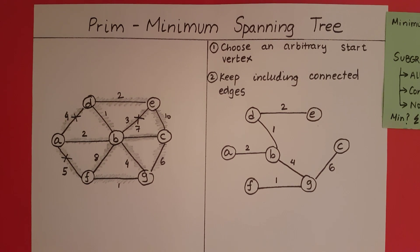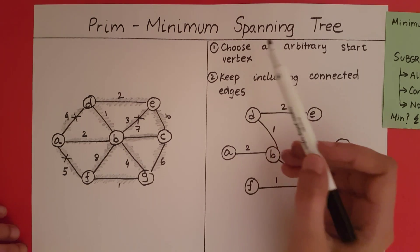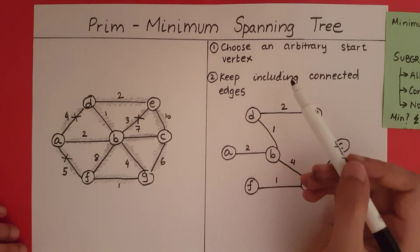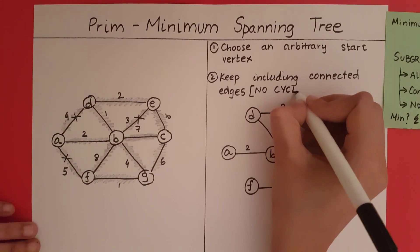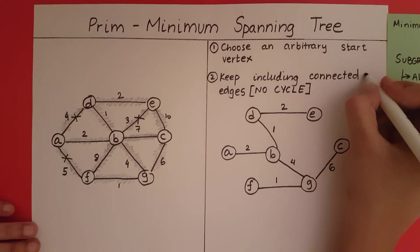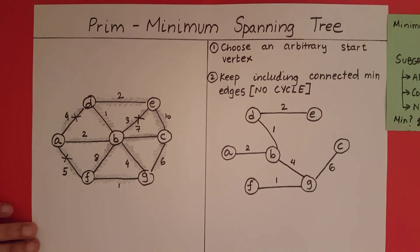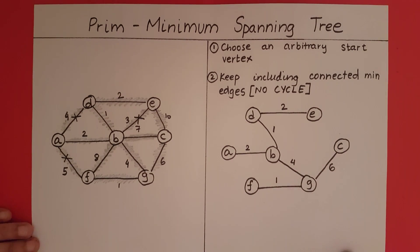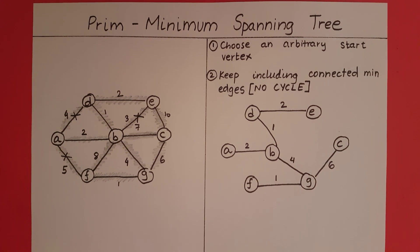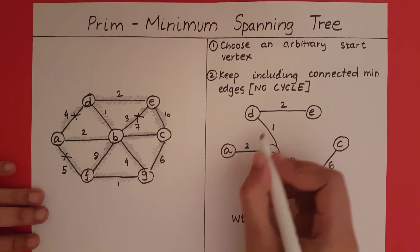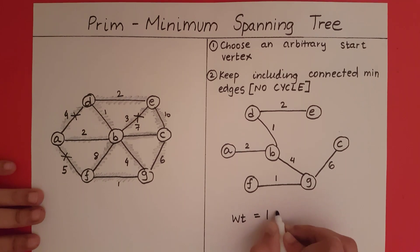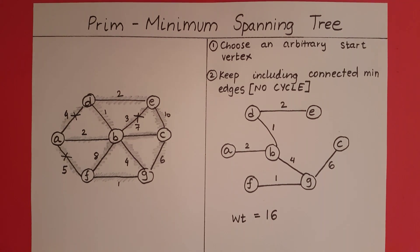With that, we have included all the vertices in our subgraph. In Prim's algorithm, we choose an arbitrary start vertex, then keep including connected edges that do not form a cycle, always selecting the minimum edge. This is how Prim's algorithm finds the minimum spanning tree. The weight of this spanning tree is 6 + 4 + 2 + 2 + 1 + 1, which equals 16.